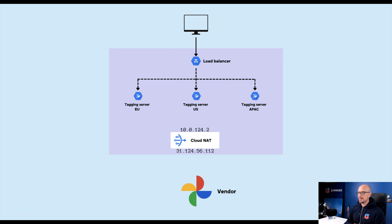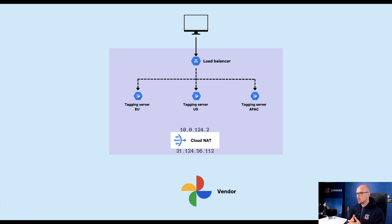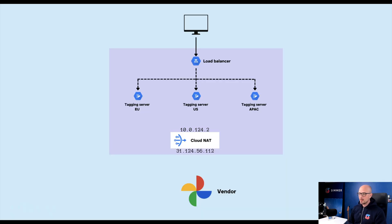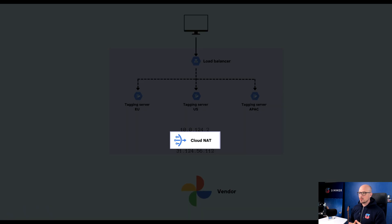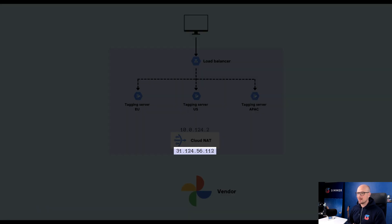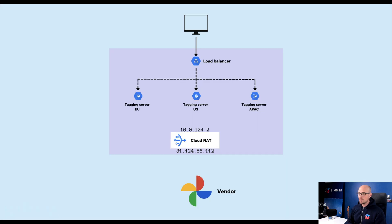What you're going to need instead is a Virtual Private Cloud. Normally your tagging servers communicate with the outside internet by sending HTTP requests directly, but they'll all have different IP addresses. With a VPC, instead of sending requests directly to the internet, the request is routed using an internal IP address — such as 10.0.124.2 — to a virtual private cloud within Google Cloud Platform. There, the hits go through a Cloud NAT gateway, which assigns them a static IP address such as 31.124.56.112. That static IP address is the one the vendor then allow-lists.